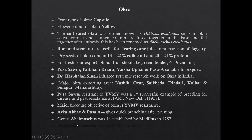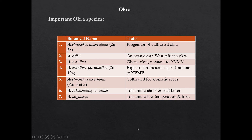Genus Abelmoschus was first established by Medicus in 1787. Species Abelmoschus manihot is used as a leafy vegetable. Now some important species of Okra: Abelmoschus tuberculatus is a progenitor of cultivated Okra.